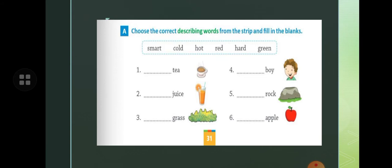You will write grass. Grass is green. You will write green grass. Boy. Smart boy. Rock. Hard rock. Apple. Red apple. You can do this easily.